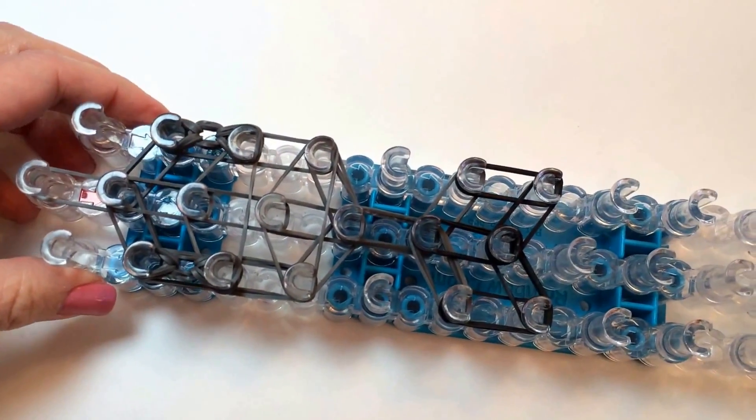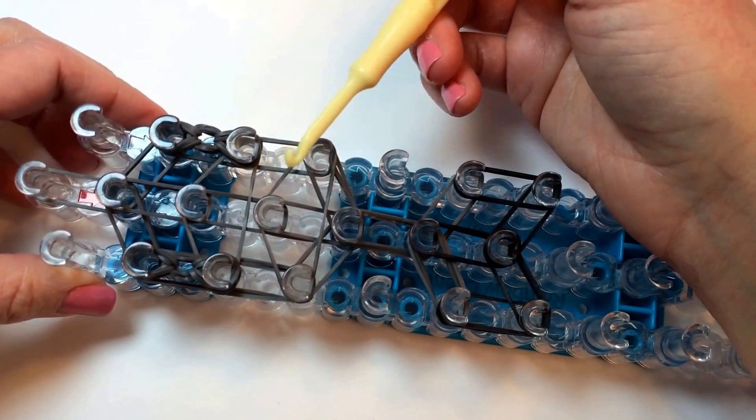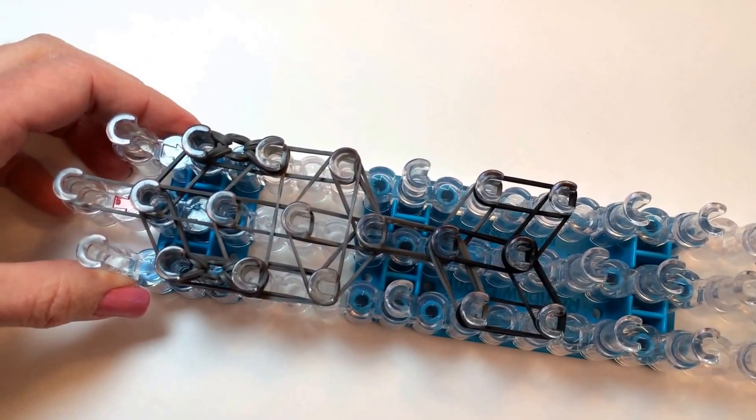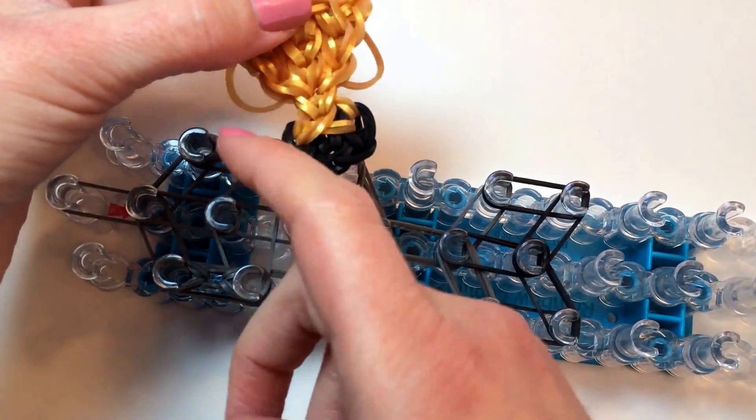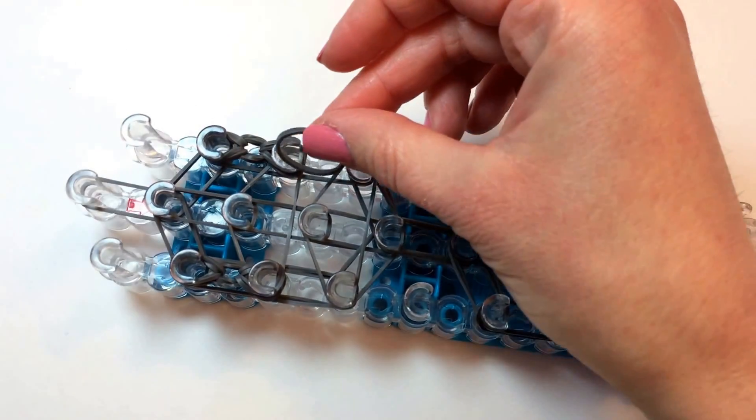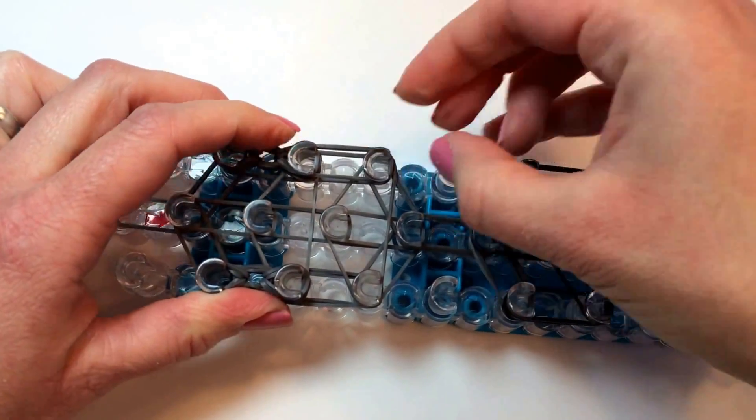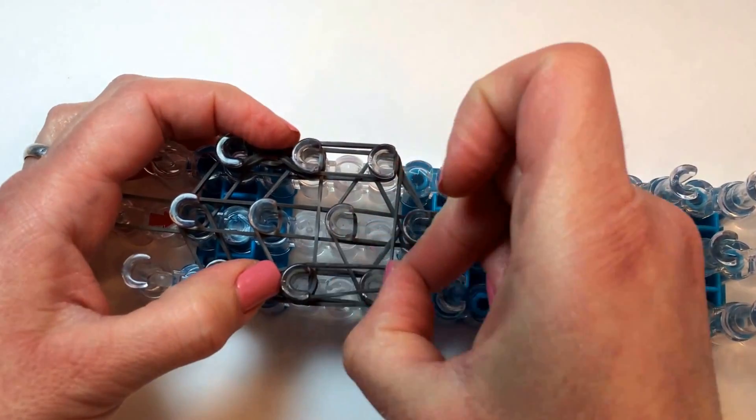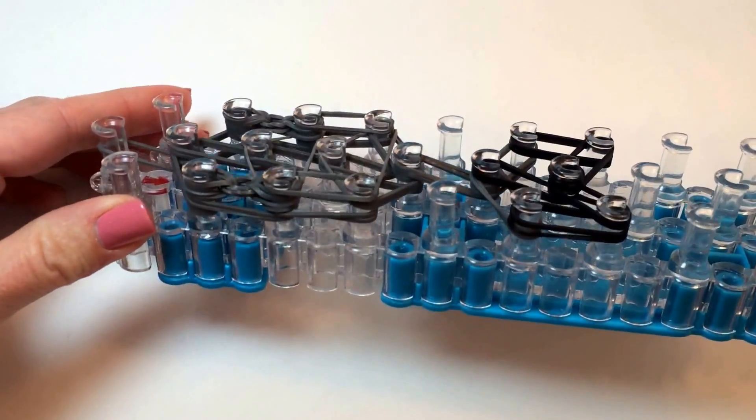And now we just need to add a single rubber band around these two pegs and these two pegs to be the handles of our trophy. If you want those handles, if you don't want them, you can leave them off. These aren't necessary to hold the structure together. They're just decoration for fun. And that's all your rubber bands in place.